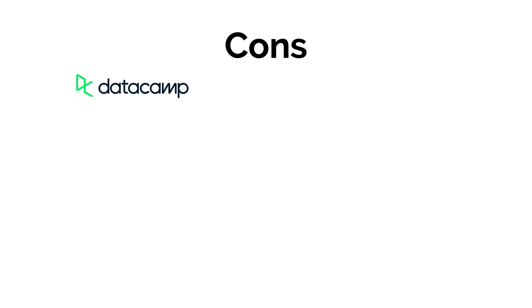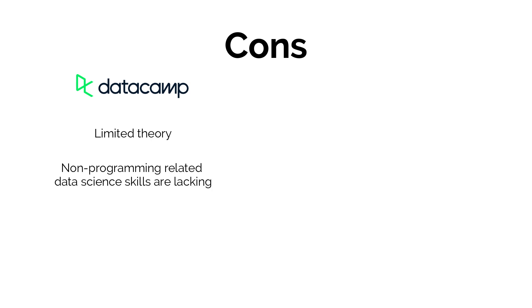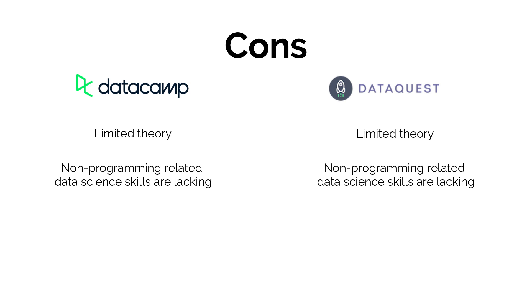Now for the cons. DataCamp cons: there's not much time spent on theory, and non-programming related data science skills are lacking. DataQuest cons: it also doesn't spend much time on theory, non-programming related data science skills are lacking, there are processing speed issues for many users with high lag time that can be frustrating, and there are fewer options than some other platforms like DataCamp.